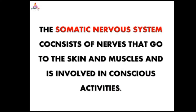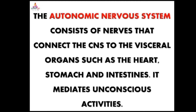The Somatic Nervous System consists of nerves that go to the skin and muscles and is involved in conscious activities. The Autonomic Nervous System consists of nerves that connect the CNS to the visceral organs such as the heart, stomach, and intestines. It mediates unconscious activities.